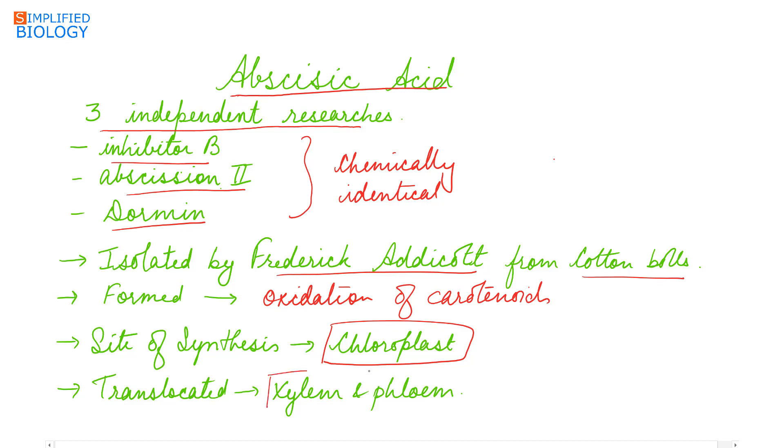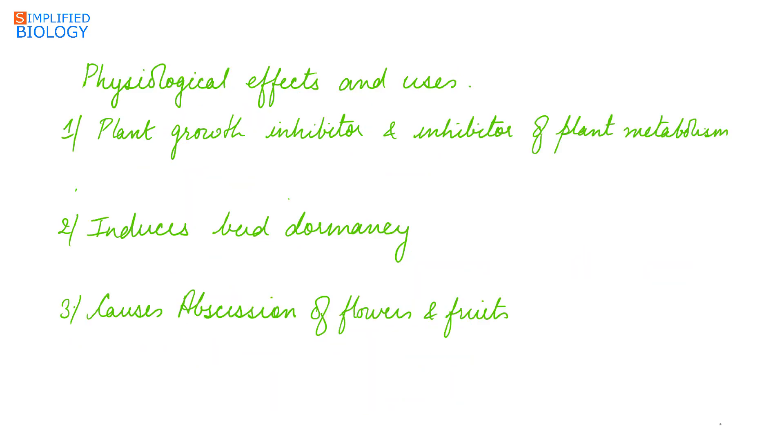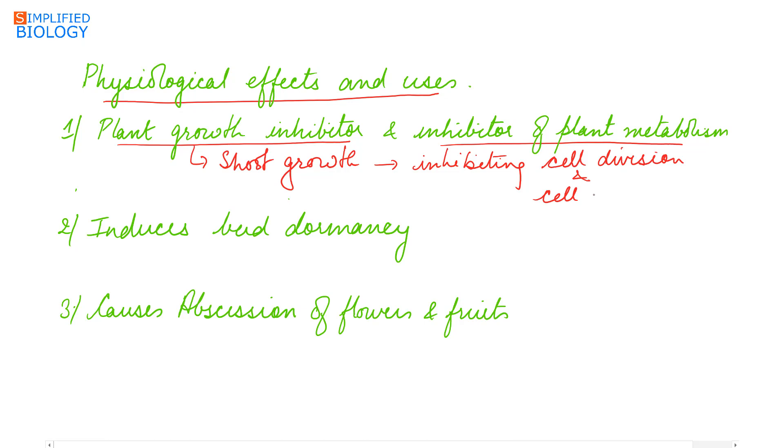Physiological effects and uses of abscisic acid: Abscisic acid is a plant growth inhibitor and inhibitor of plant metabolism. It specifically inhibits shoot growth by inhibiting cell division and cell elongation, while it has no effect on root growth.